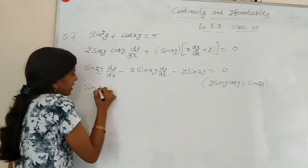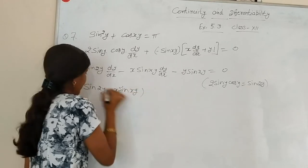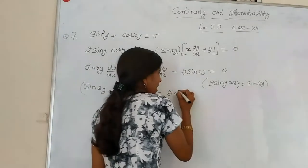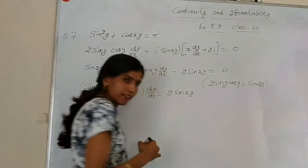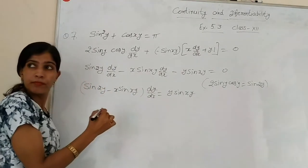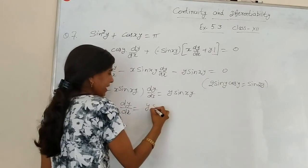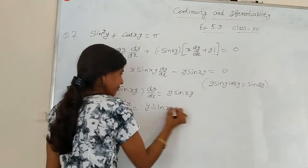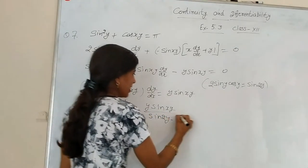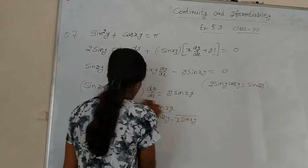So: sin 2y · dy/dx − x sin(xy) · dy/dx = y sin(xy). Taking dy/dx common and solving, dy/dx equals y sin(xy) divided by (sin 2y − x sin(xy)). This is our answer.